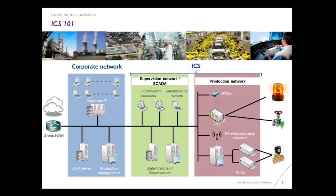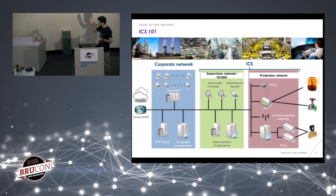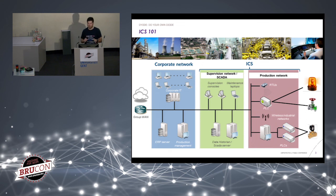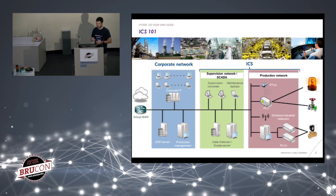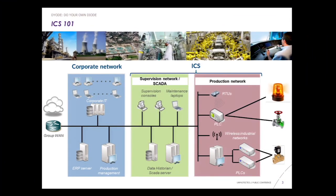Are you guys familiar with ICS, with industrial control systems? That was a rhetorical question — I'm just going to explain it anyway. Industrial control systems are the systems that control any plant, factory, and building automation system. You will find them everywhere — in every vertical, in the pharmaceutical industry, energy sector, transportation, manufacturing. This is a very simplified network diagram of what an ICS may look like.